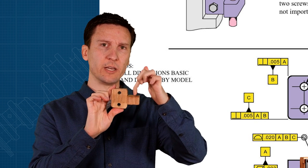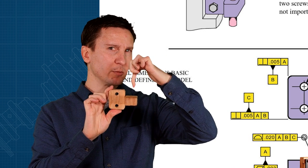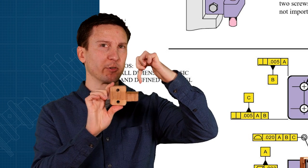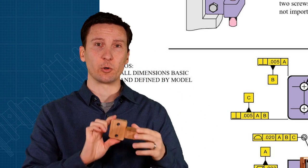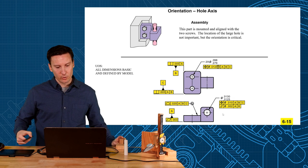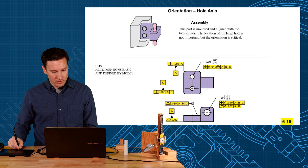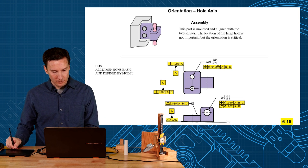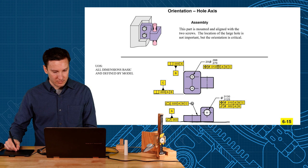Now this hole is very important, not where it is because we can do adjustments to adjust for the location, but the orientation of it is very critical. So here we set up the datum features on how it mounts: mounts to the back face A, mounts to the side face B, and the bottom edge C.